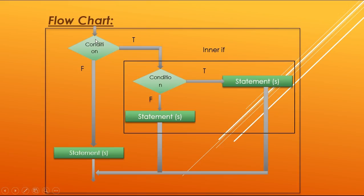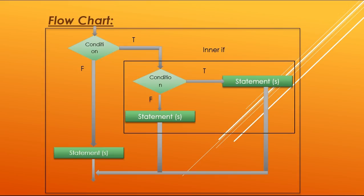The flowchart shows that when the program executes and the control enters into the outer condition, if this condition comes true it will enter into the inner if statement. This inner condition is then checked — if it comes true, it will execute the statement written in the inner if. If this inner condition comes false, it will by default execute the else statement. But if the outer if condition comes false, it will directly execute the else statement of the outer if by default. That's how the nested if structure works.